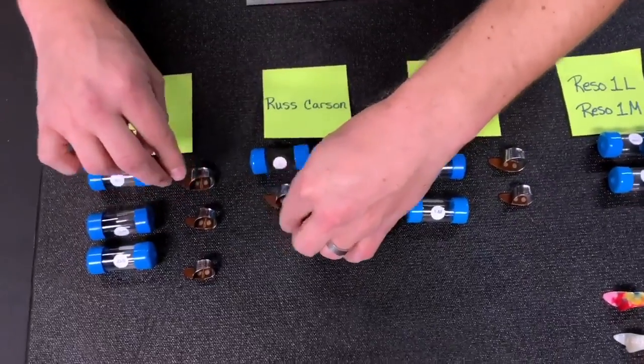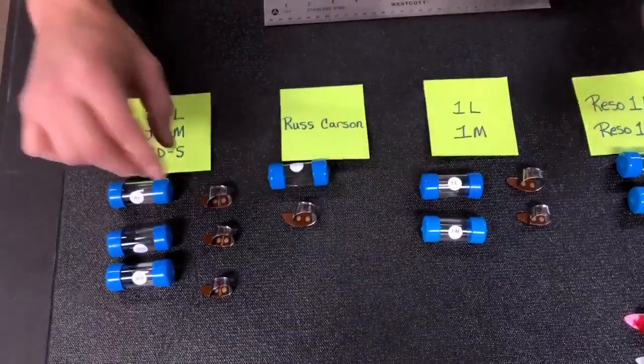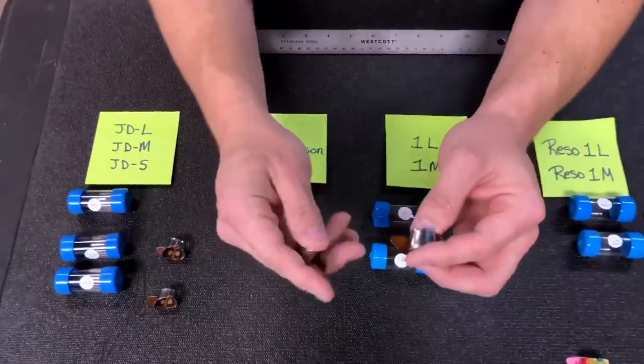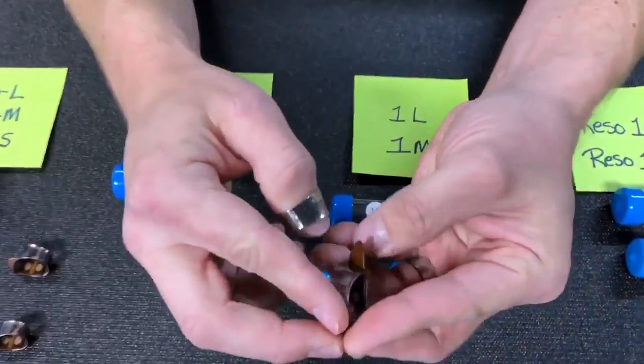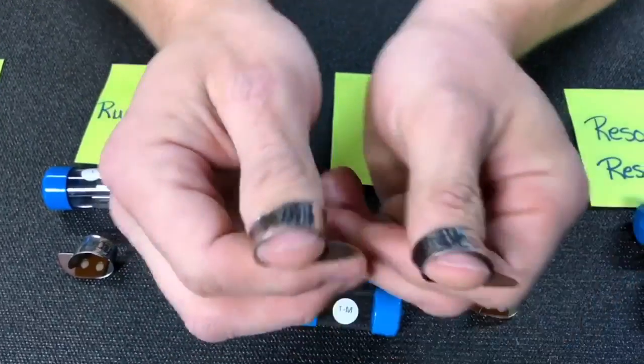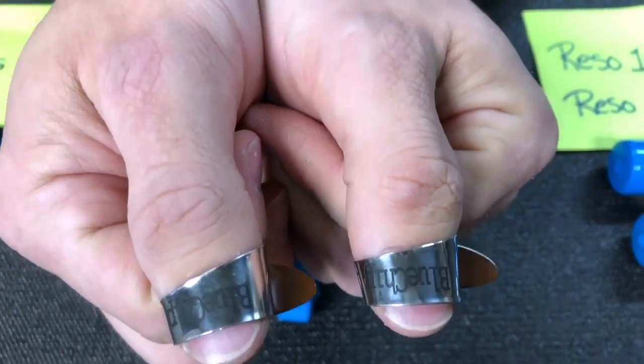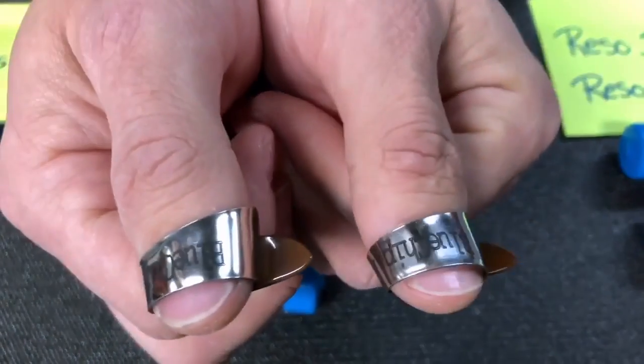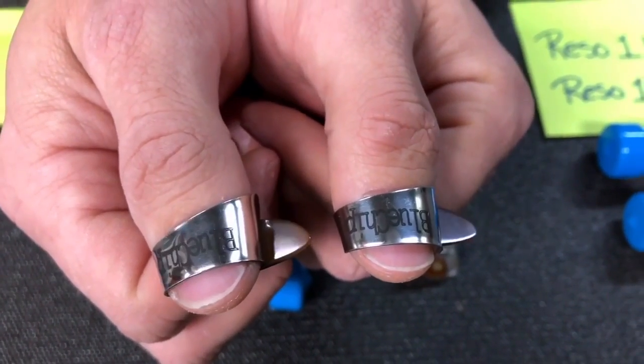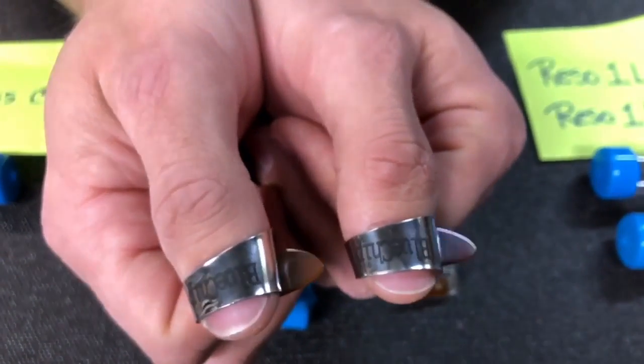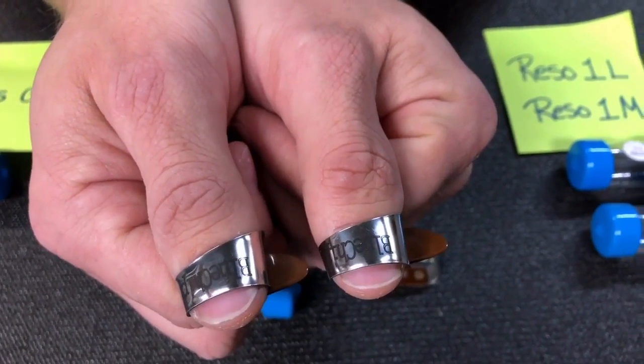I didn't compare the JD to the standard, so let's do that real quick. Here's the JD versus the standard. You can see there's less difference between a JD and a standard than there is between a JD and a Russ Carson. But it still is a little shorter and a little more blunt of a blade than the standard pick.